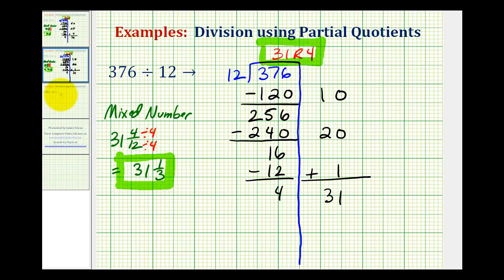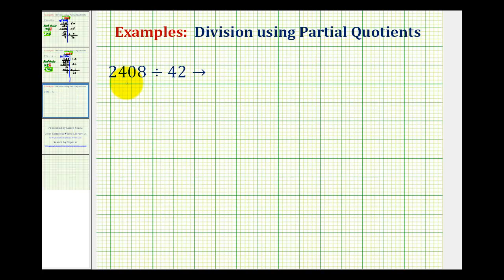Let's take a look at a third example. 2,408 divided by 42. We're going to find a simple product that involves 42 that's less than 2,408. So let's go ahead and start with 10.